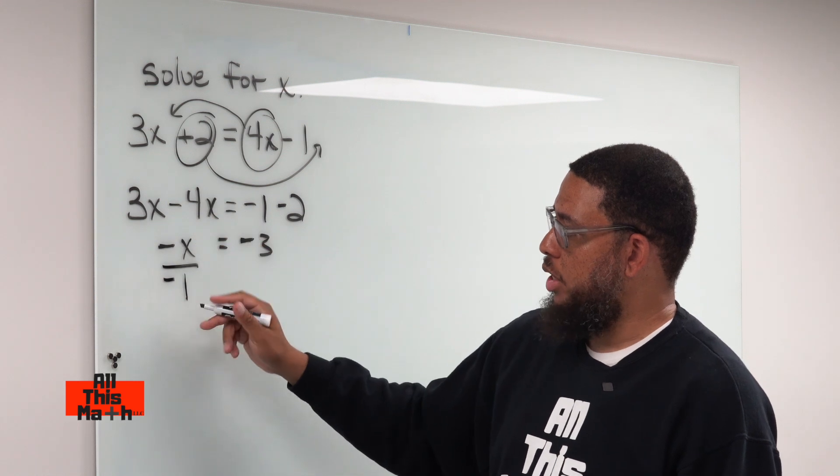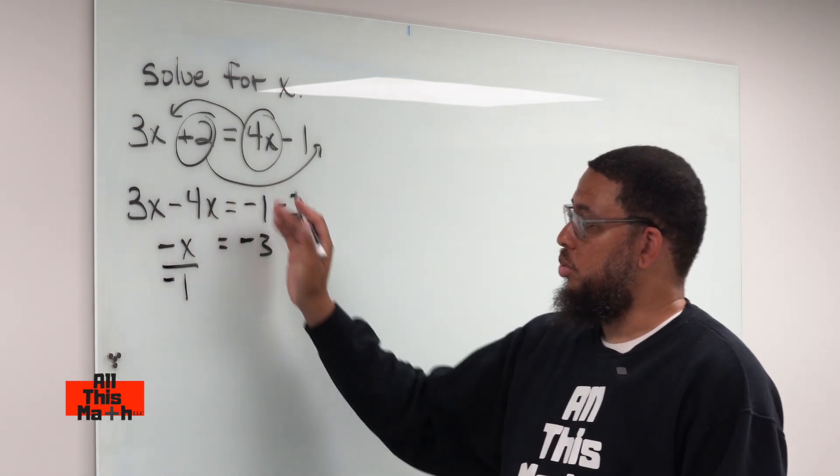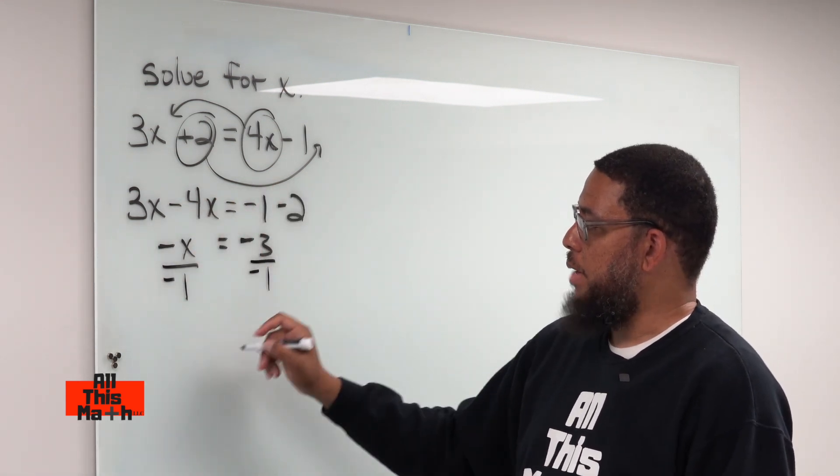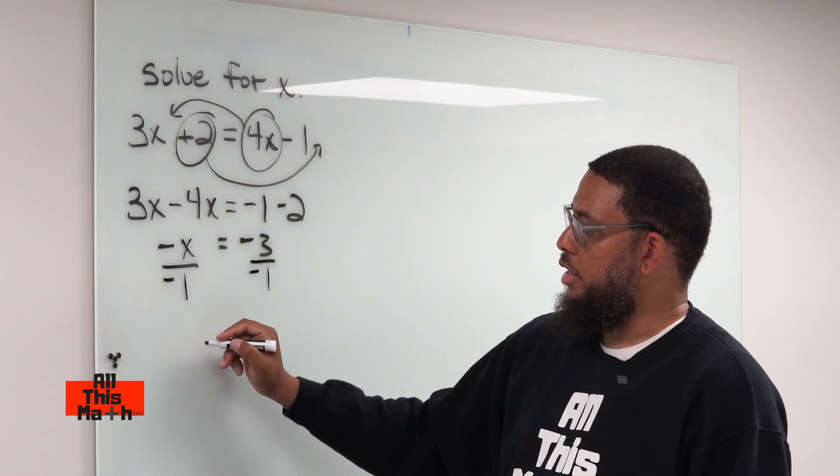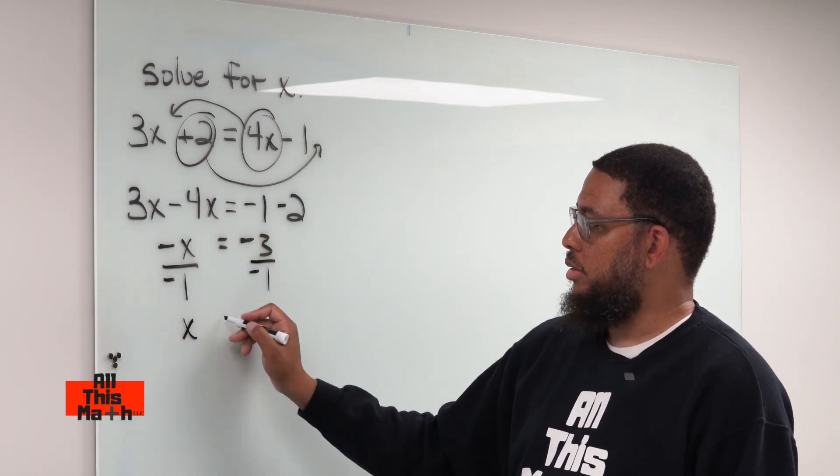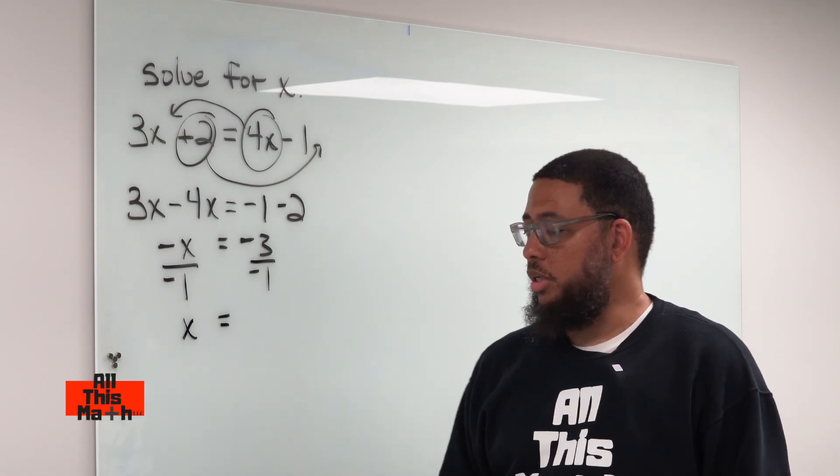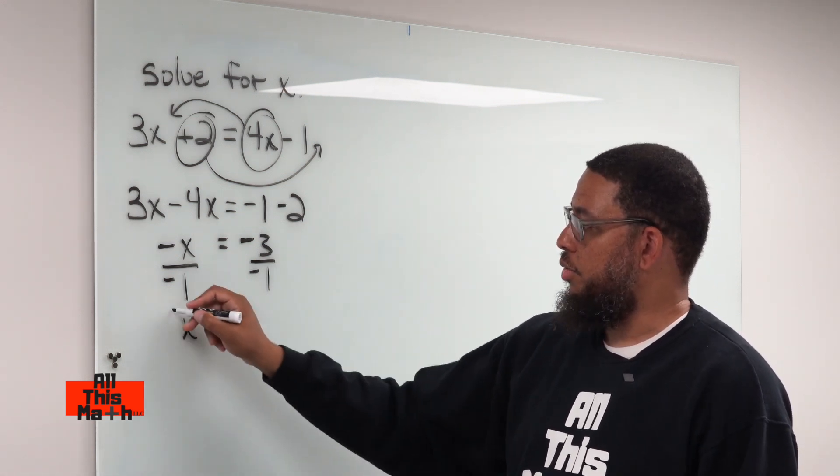So we divide by negative 1, but if we do it on the left side, we also need to do it on the right side in order to keep everything balanced. So negative x divided by negative 1 leaves us with just positive x. And on the right side, negative 3 divided by negative 1 leaves us with positive 3.